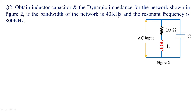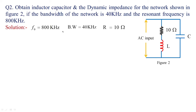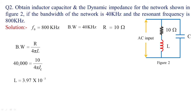We will use the formula and substitute the values to obtain the dynamic impedance. The resonant frequency is 800 kilohertz, bandwidth is 40 kilohertz, and resistor value is 10 ohms. For the parallel circuit, bandwidth equals R divided by 4πL. Substituting the bandwidth as 40×10³ and R as 10 divided by 4π into L, we get L equal to 39.7 microhenries.